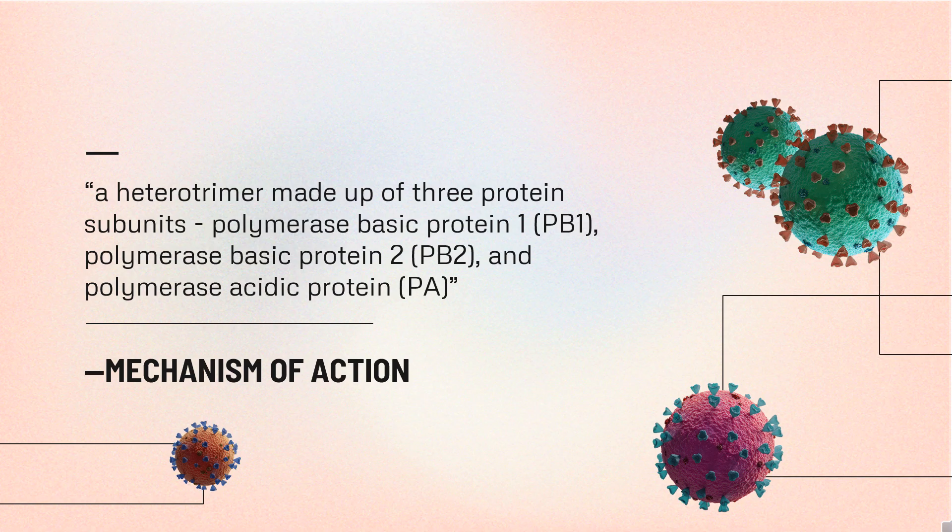The PB2 subunit binds to the cap of host cellular pre-messenger RNA, allowing the PA protein — a cap-dependent endonuclease — to cleave the capped pre-messenger RNA. This step of mRNA synthesis by the PA protein, also known as the cap-snatching process, provides an RNA primer for the PB1 subunit, which carries out its RNA-dependent RNA polymerase function to proceed with viral mRNA transcription.